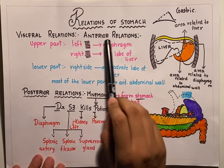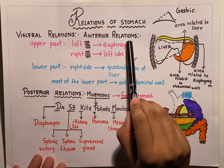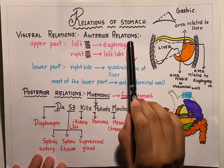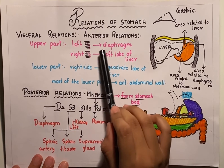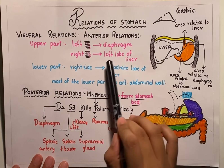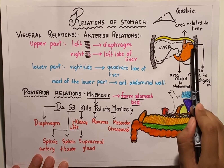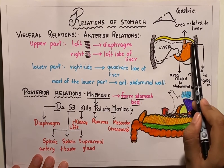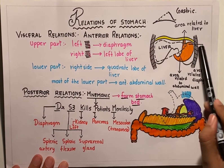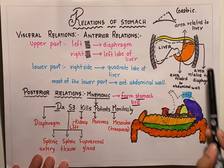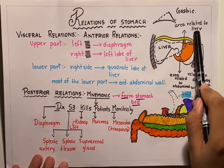The anterior relations of the stomach, or the relations of the anterosuperior surface of the stomach, are as follows. In the upper part, the left side is related to the diaphragm, whereas the right region is related to the left lobe of the liver.